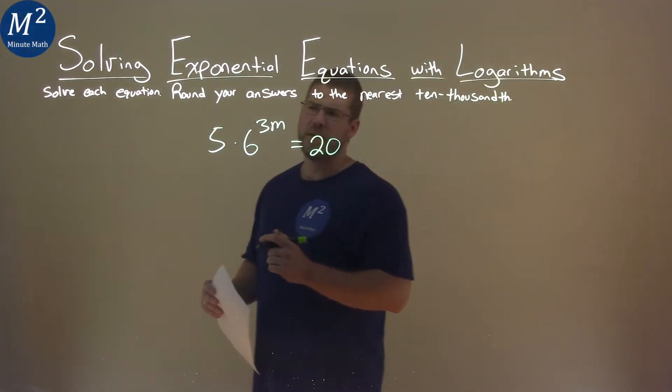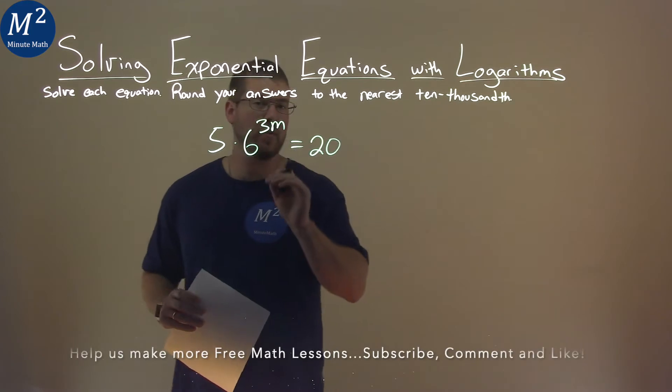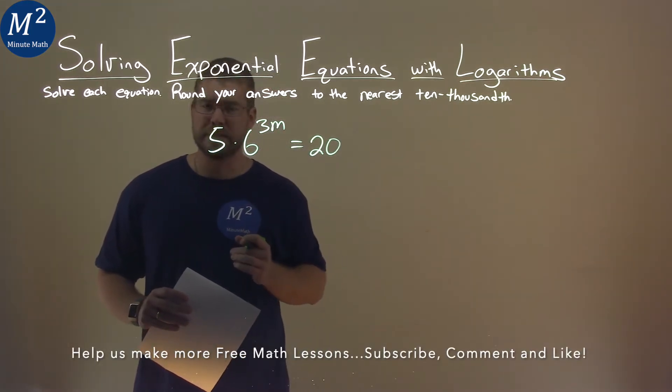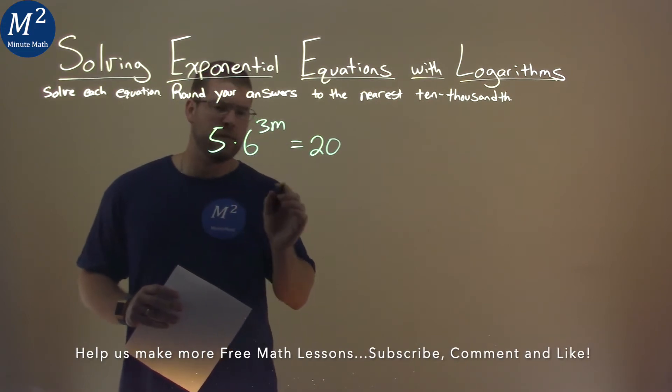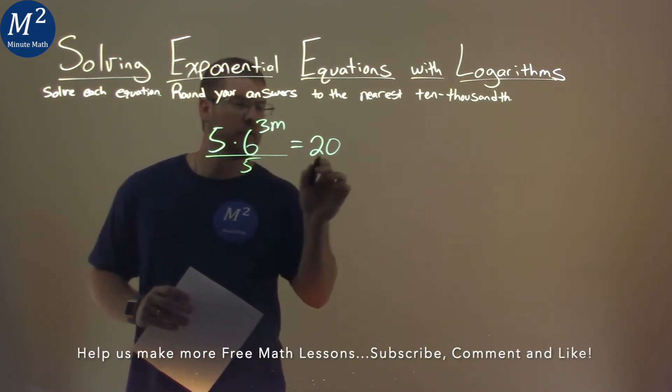We're given this problem right here: 5 times 6 to the 3m power equals 20, and we've got to solve this. Well, let's try to get 6 to the 3m power by itself first. So I'm going to divide both sides by 5.